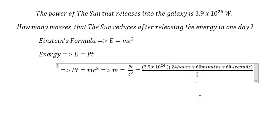C is 3 × 10⁸ meters per second, the speed of light, and we need to square it.